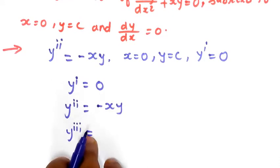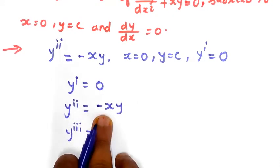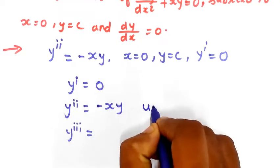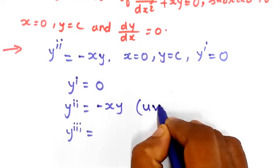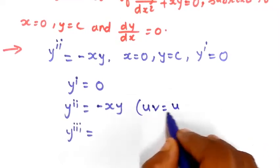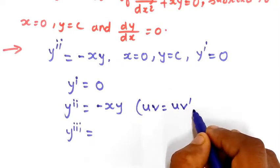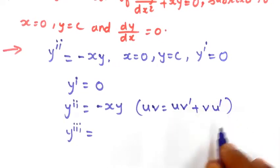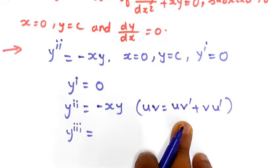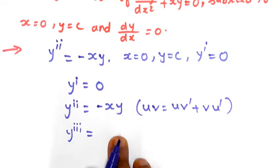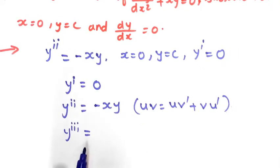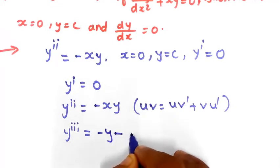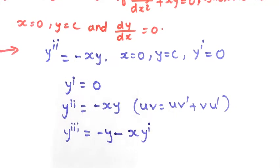For y₃, we have to use the product rule (u·v rule): u remains as is and we take the derivative of v, plus v remains as is and we take the derivative of u. Applying this rule to differentiate y₂ = -xy, we get y₃ = -y - x·y₁. Note that both x and y are variables here.